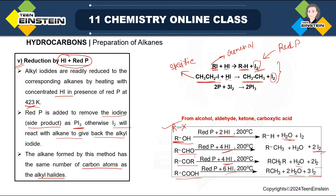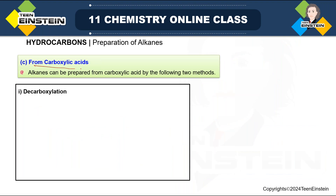In alcohol the R group gives RH; from aldehyde R-CHO gives one carbon from the aldehyde group as well, so the carbon number is same. In carboxylic acid, R-COOH contributes R plus one carbon from COOH. So whatever the number of carbon atoms in the main substrate, the product also has the same number. Under the heading of preparation from alkyl halides, we have covered all five methods. Next is preparation from carboxylic acids — total two more extra methods.